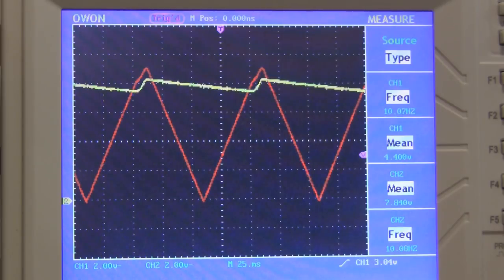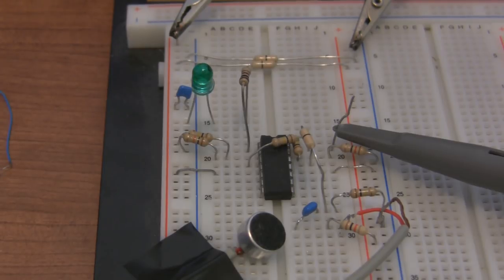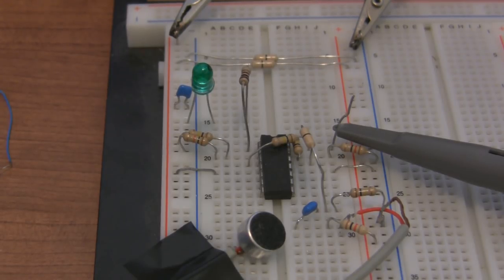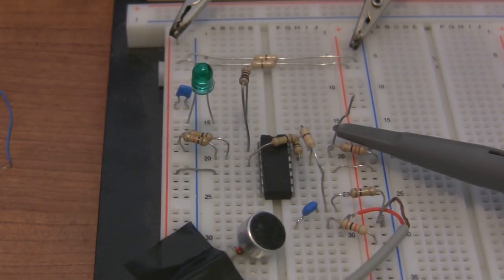Alright, now let's see what a peak detector can do for my clapper circuit. If you remember, the LED only stayed on while there was a loud sound. It would instantly turn off when it was quiet. For the clapper circuit to be practical, you'd want a single clap to activate the circuit for several seconds or several minutes.